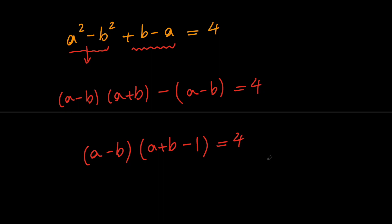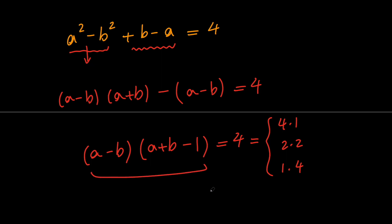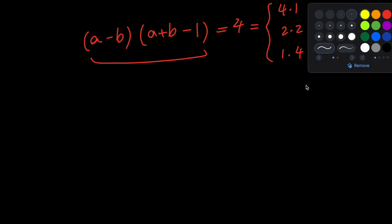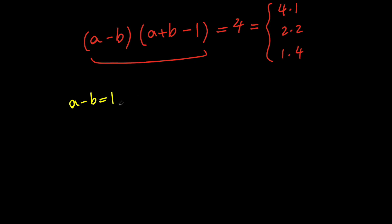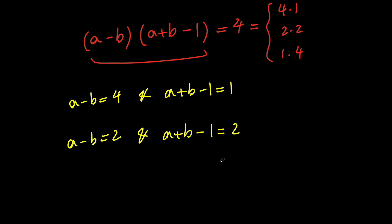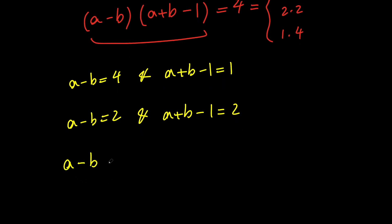Now since we want to solve for integer solutions, and 4 can be written as 4 times 1, or 2 times 2, or 1 times 4, we have three cases. Case 1: a minus b equals 4 and a plus b minus 1 equals 1. Case 2: a minus b equals 2 and a plus b minus 1 equals 2. Case 3: a minus b equals 1 and a plus b minus 1 equals 4.